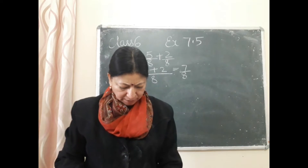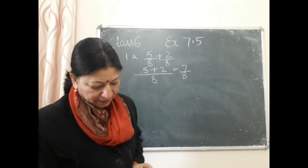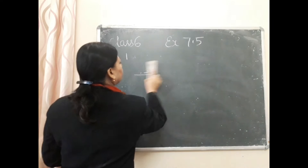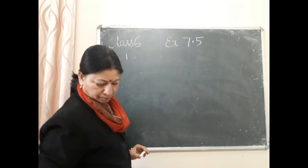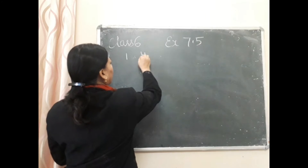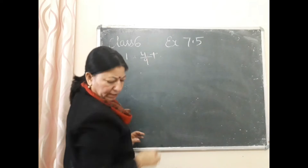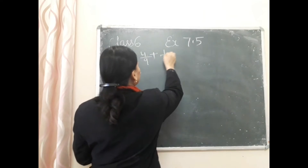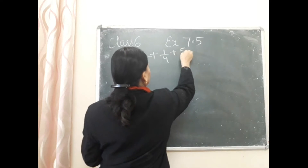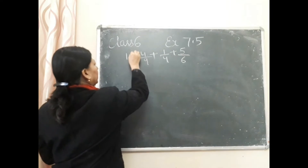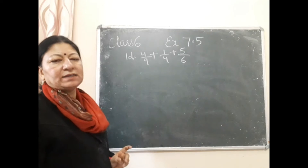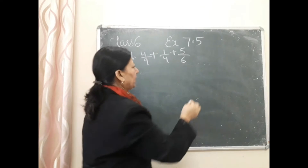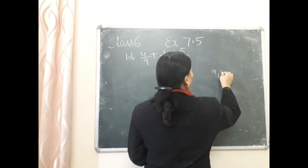Next, question number D: 4/9 + 1/4 + 5/6. सबसे पहले हम denominator 9, 4, 6 का LCM लेंगे।